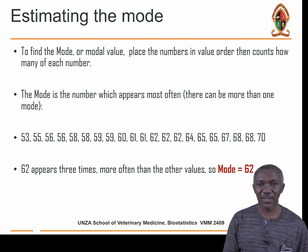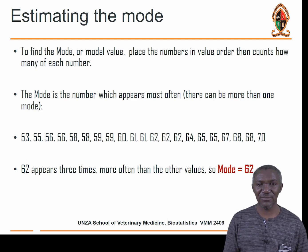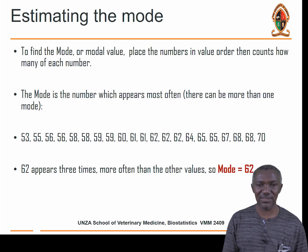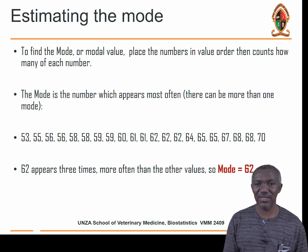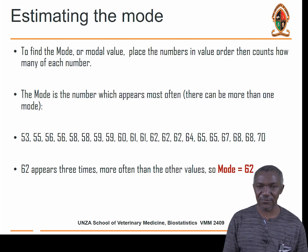Looking at this dataset, we want to find the most frequently occurring number — that would be the mode. The value 62 appears three times, more than any other value. So in this case, 62 is the mode — the most frequently observed number.